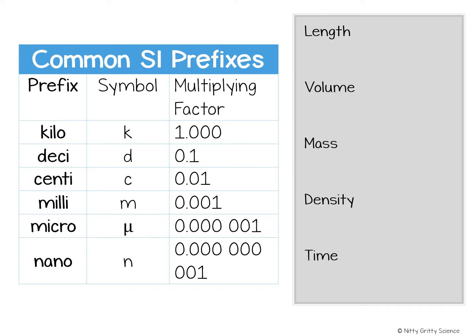For example, the prefix kilo means 1,000. That means 1 kilometer equals 1,000 meters. Likewise, 1 kilogram equals 1,000 grams. The most frequently used prefixes are shown in the table.